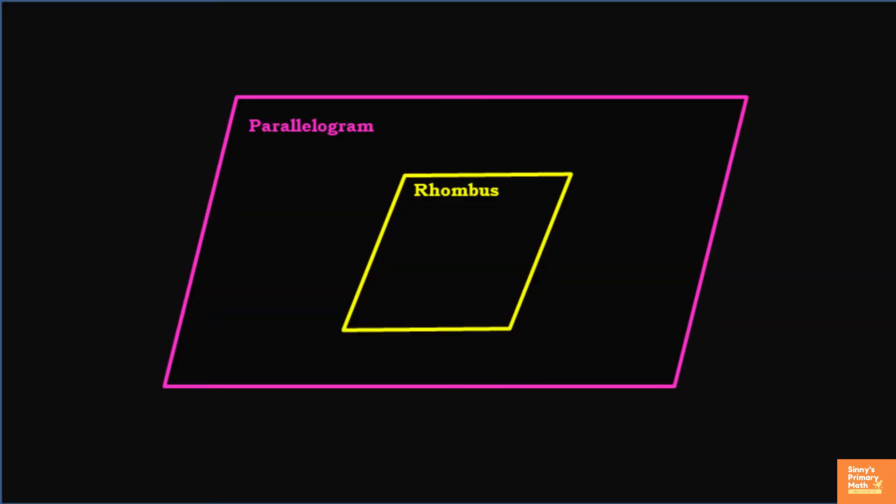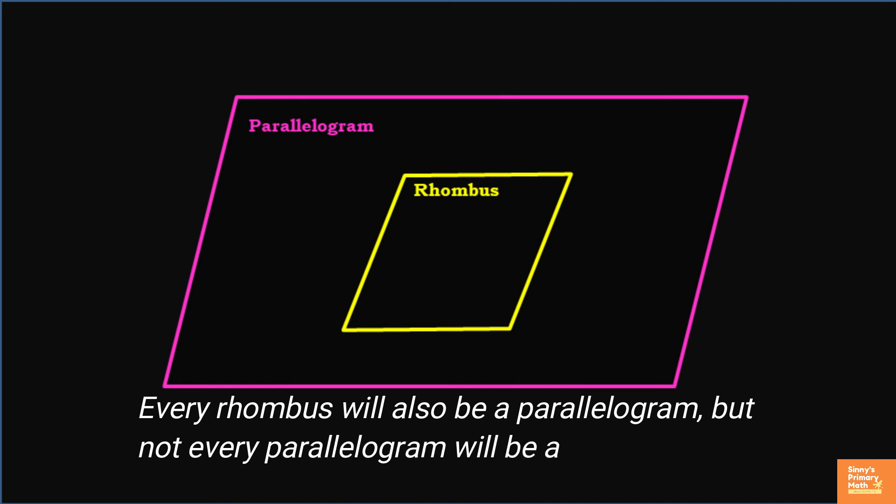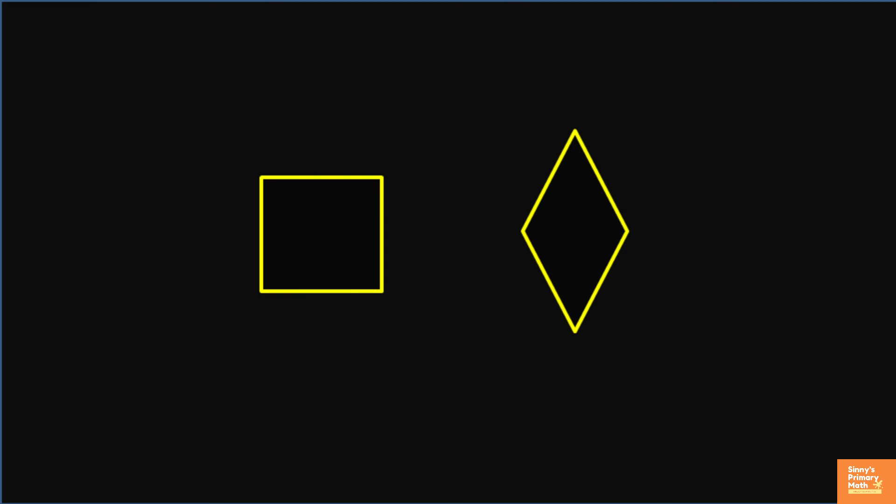In the diagram shown, we can notice that every rhombus will also be a parallelogram, but not every parallelogram will be a rhombus. A square can be considered as a special case of a rhombus.